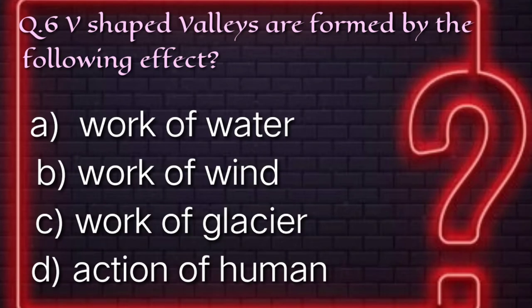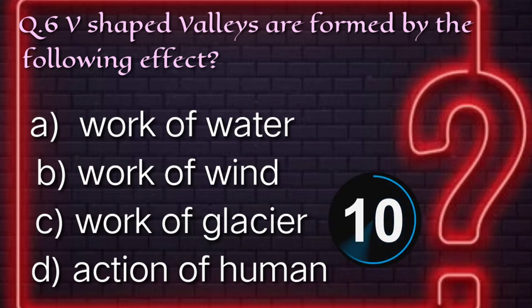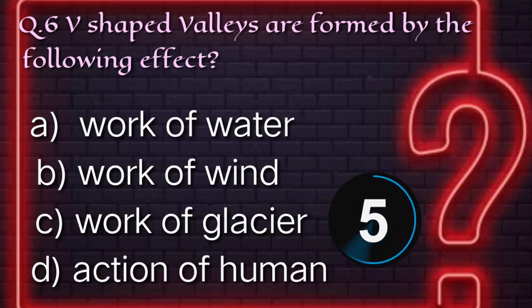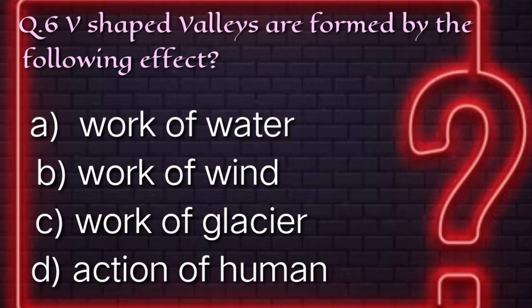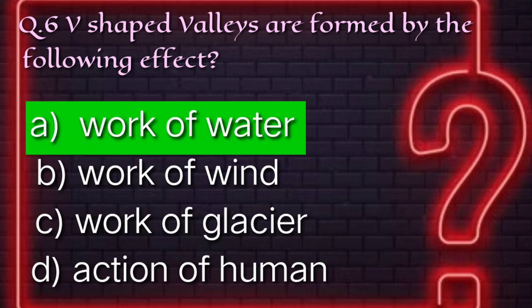Question number six: V-shaped valleys are formed by which effect? Answer: The work of water.